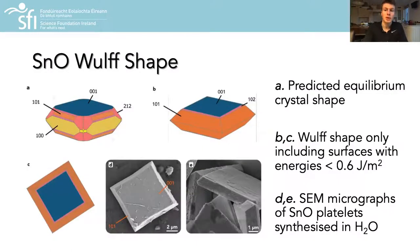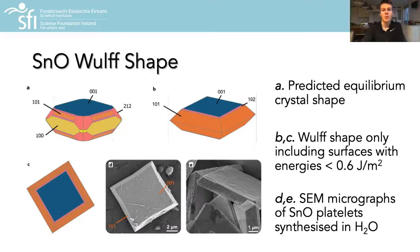To understand the underlying chemistry governing the platelet morphology, we calculated the thermodynamically-favored crystal shape according to the Gibbs-Wulff theorem. The result shows good agreement with our solution-grown platelets, with the only slight differences being the absence of the higher-energy 100 and 212 crystal surfaces. We propose that this is due to a stabilization of the 001 and 101 phases in the highly polar water solvent, exposing greater adsorbate binding site densities, and also that the platelets may not have reached the thermodynamic limit of large particles.